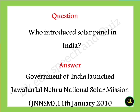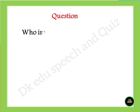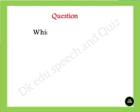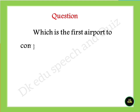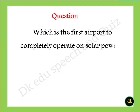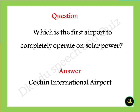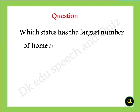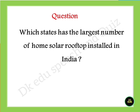Who invented the solar panel first? Answer: Charles Fritts. Which is the first airport to completely operate on solar power? Answer: Cochin International Airport. Which state has the largest number of home solar rooftop installations in India? Answer: Gujarat.